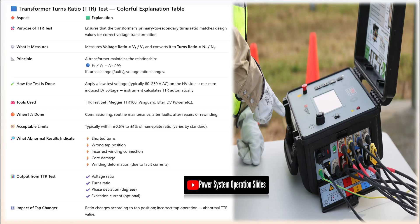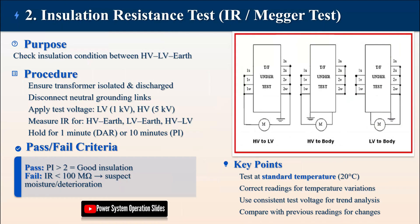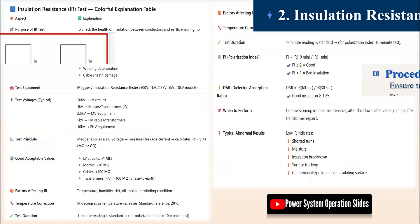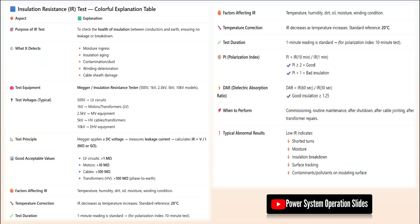A TTR meter is connected to both high-voltage (HV) and low-voltage (LV) terminals. After selecting the appropriate vector group on the TTR device, a low-voltage test signal is automatically applied, and the HV/LV ratio is recorded for all tap positions. The results are compared against nameplate values with a tolerance of ±0.5%. A transformer passes this test when the ratio is within tolerance on all taps, while significant deviation indicates possible shorted turns requiring further investigation.